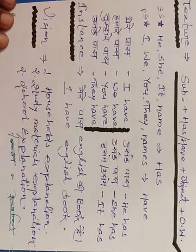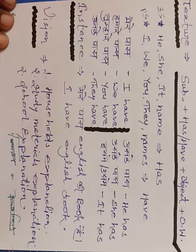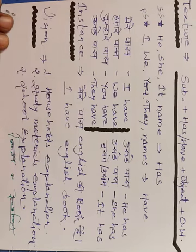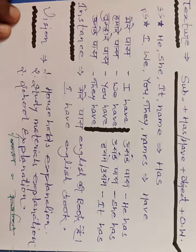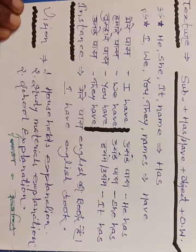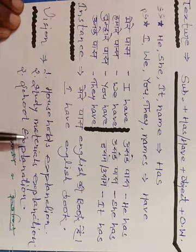Singular subject series — SS: he, she, it, name — takes has. Plural subject series — PS: I, we, you, they, more than one name — takes have. Proper meanings you should know. And the last point — this vision. You can explain it for your household, your office, your school, your study materials, and many more. Keep practicing these visions to build fluency and consistency in English speaking.